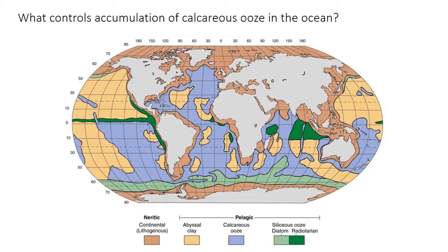Looking at this map here, you may notice how the Atlantic Ocean is nearly entirely covered with calcareous ooze, while the Pacific, especially the North Pacific, has much less. And in the South Pacific, the eastern side has a lot more calcareous ooze than the central part. In the next few slides, we're going to consider the factors that control accumulation of calcareous ooze.